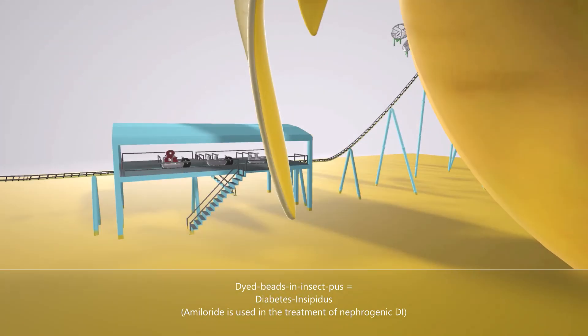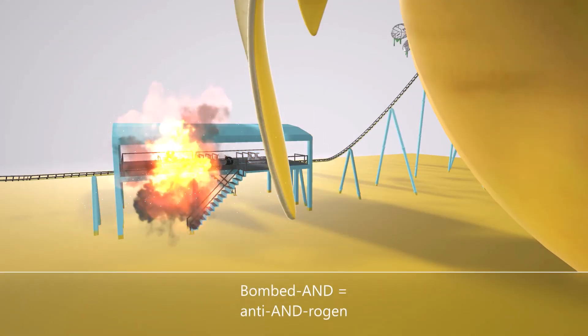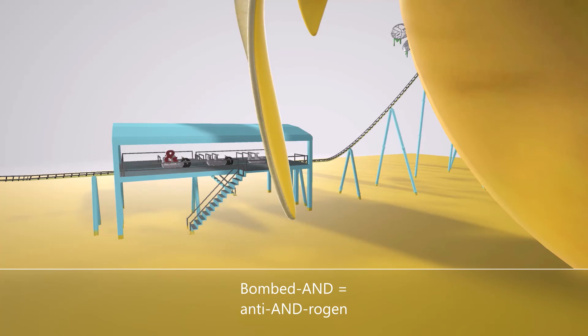And finally, under here we see the AND sign next to the bomb over here. Anti-AND or antiandrogen. Potassium sparing diuretics can act as antiandrogens.